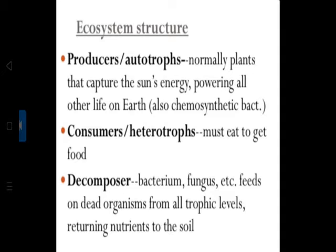In terrestrial ecosystems, the major autotrophs are the flowering plants. In the oceans, they are the microscopic phytoplanktons — tiny plants not usually visible unless present in great abundance, giving water a greenish tinge. In simple terms, producers as autotrophs normally capture the sun's energy, powering all other life on earth.